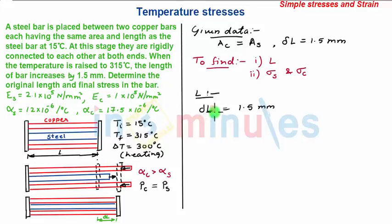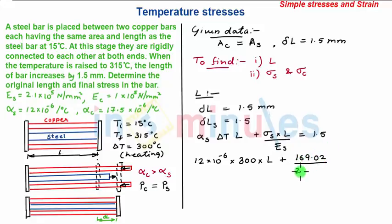I take this as delta L of steel bar. Writing the formula, we get alpha_S delta T L plus sigma_S times L upon E_S equals 1.5 mm. Alpha_S is 12 times 10^-6 multiplied by 300 multiplied by length L, plus sigma_S, which is 169.02, upon E_S, which is 2.1 times 10^5 multiplied by L, equals 1.5.